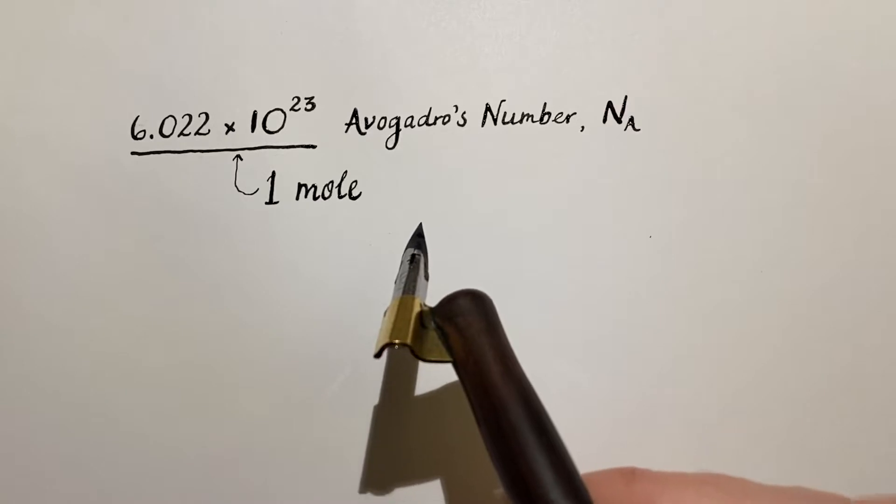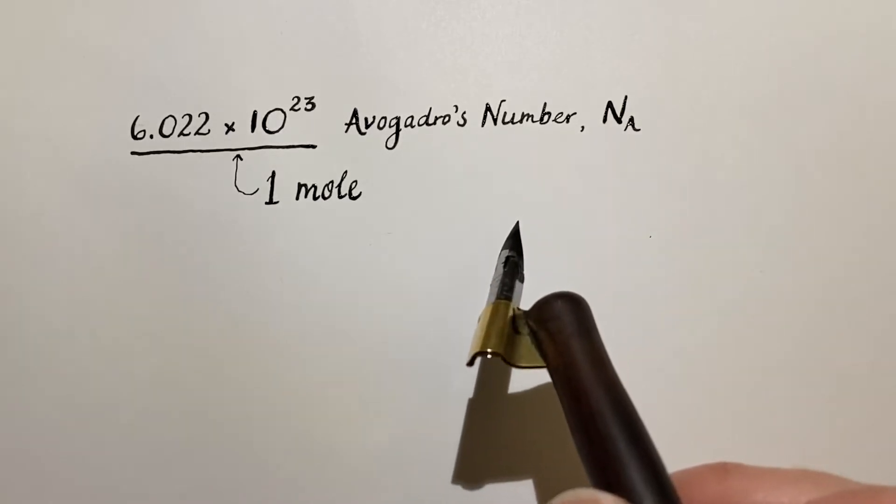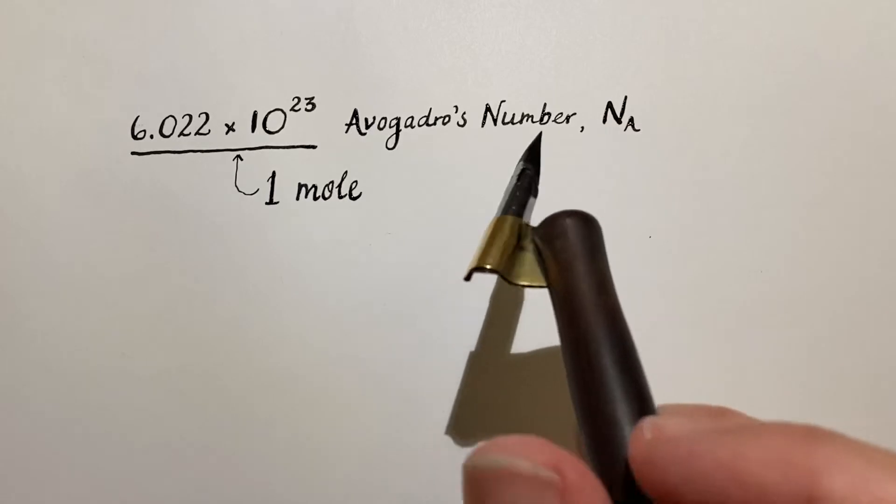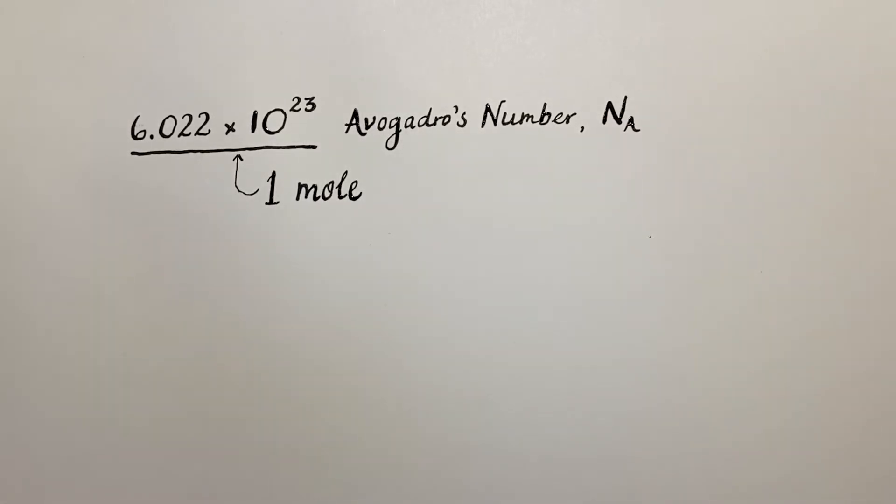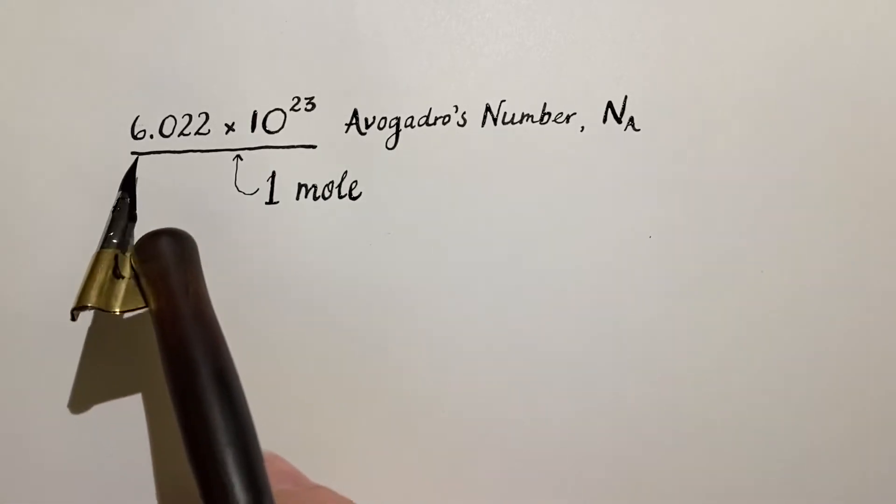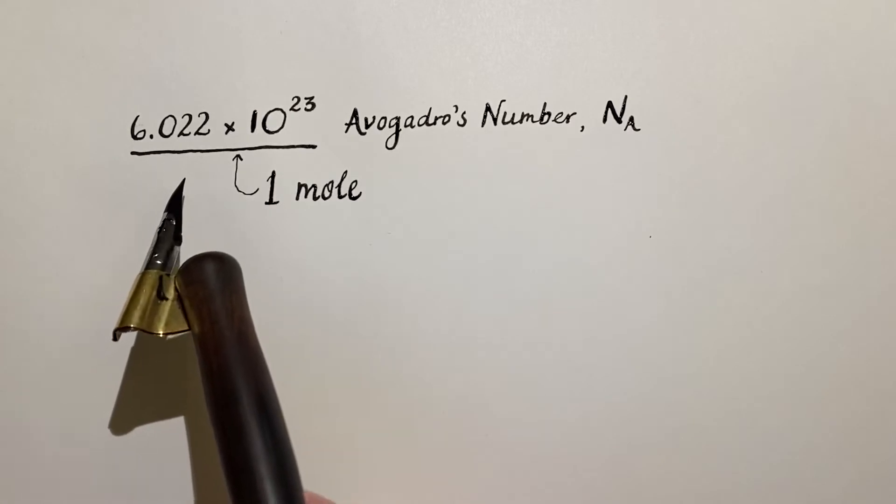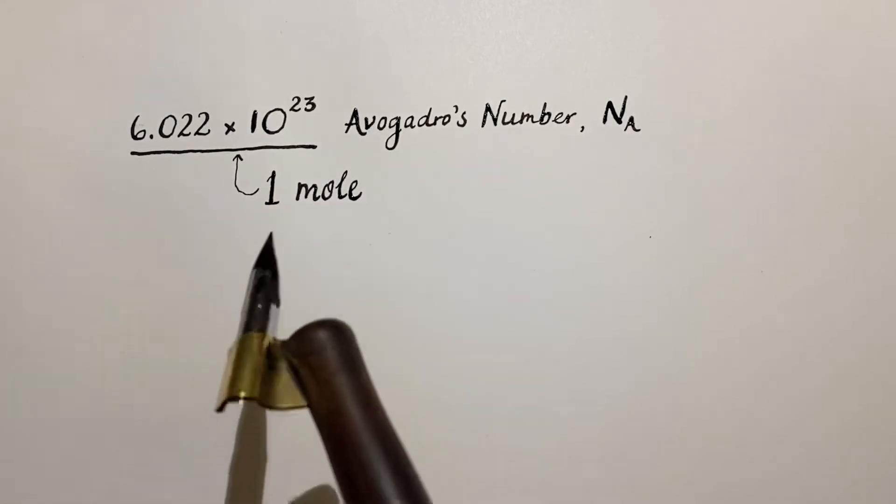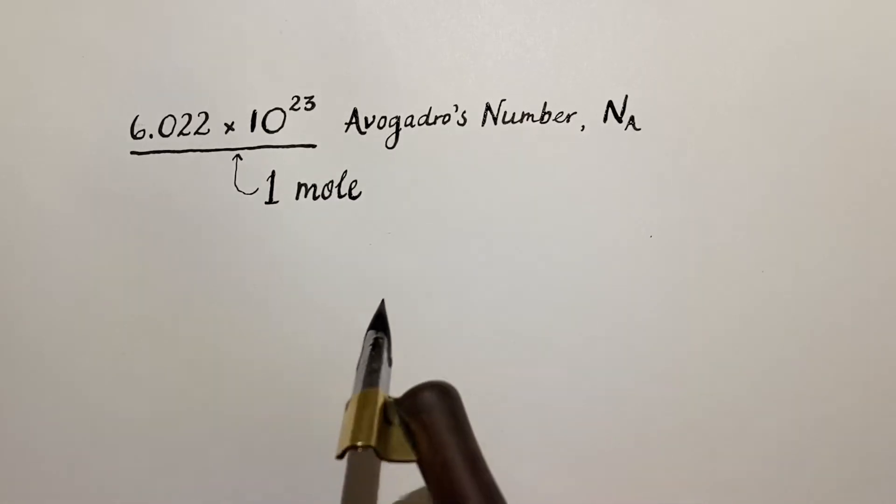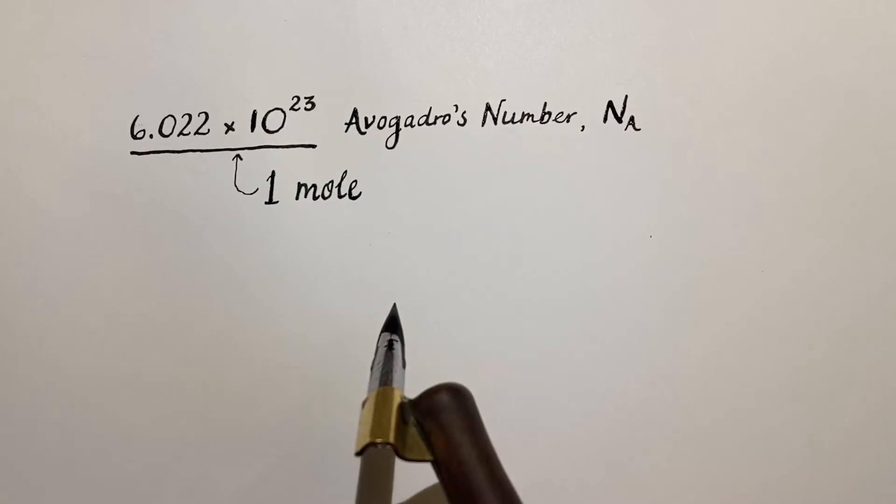And that can be anything - usually in chemistry we're talking about molecules or atoms or photons of light. But we really do need to work with numbers that are this large in order to be able to see what we're working with or measure the mass or volume of it.